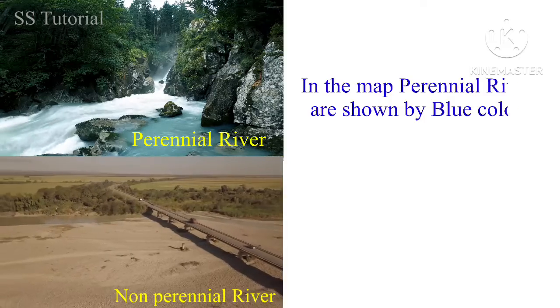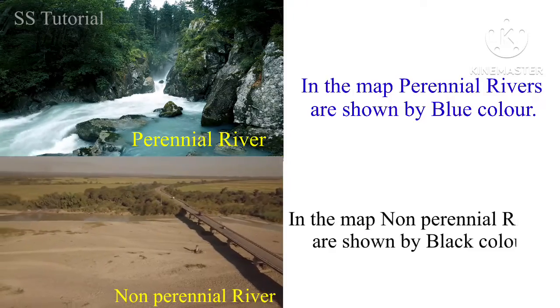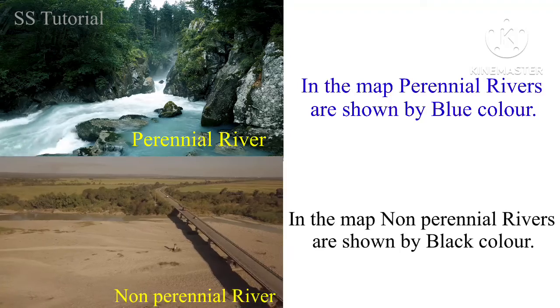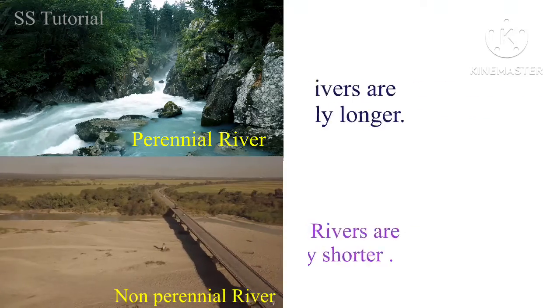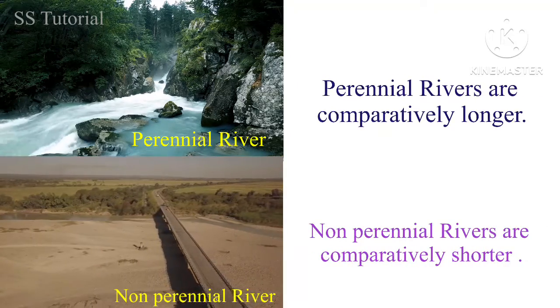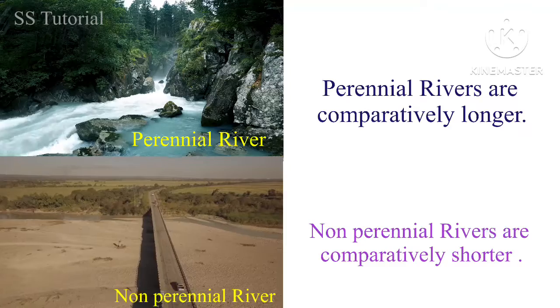On a map, perennial rivers are shown in blue color, whereas non-perennial rivers are shown in black color. Perennial rivers are comparatively longer, but non-perennial rivers are comparatively shorter.